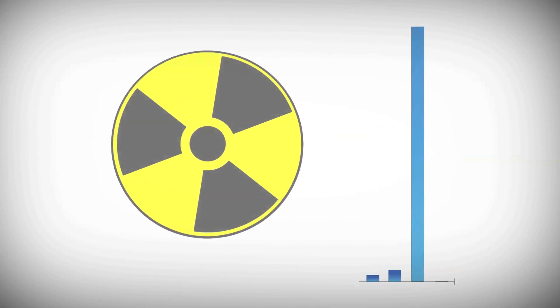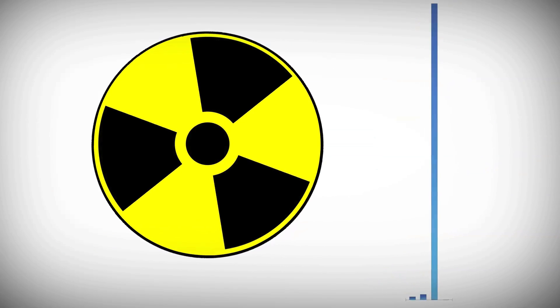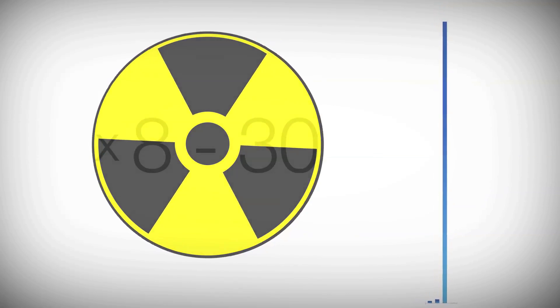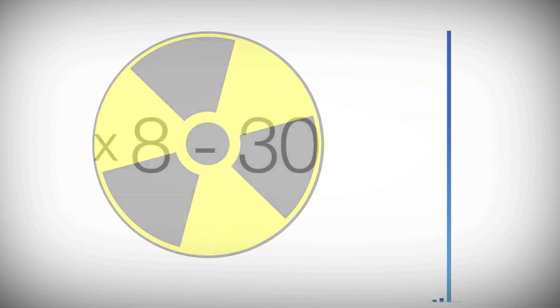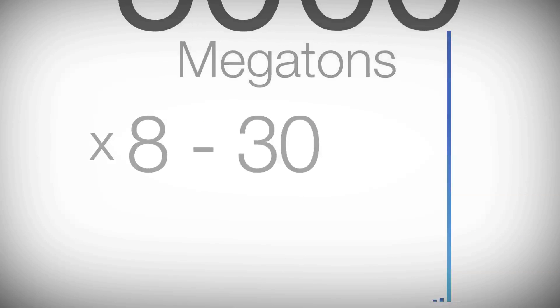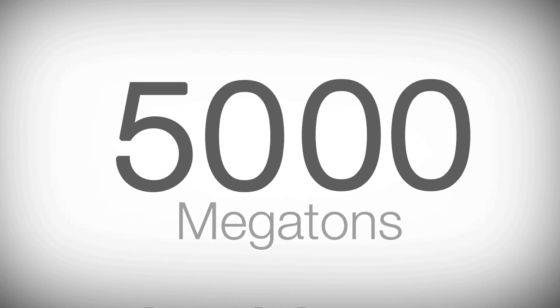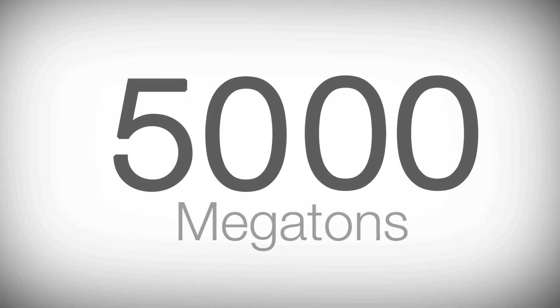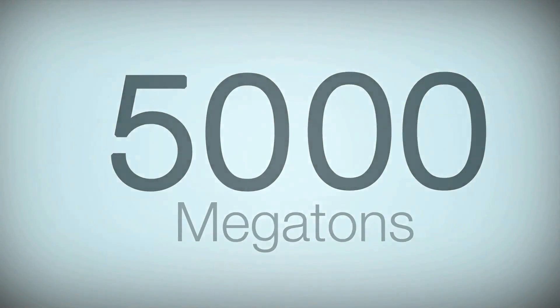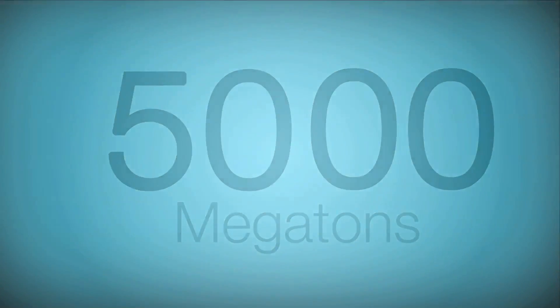Since then, nuclear warheads have gotten a whole lot stronger. Most nuclear weapons today are between 8 and 30 times more powerful than the weapons that destroyed Hiroshima and Nagasaki. Current estimates put the explosive power of the world's nuclear arsenals at 5,000 megatons - 400,000 times as powerful as the Hiroshima bomb.